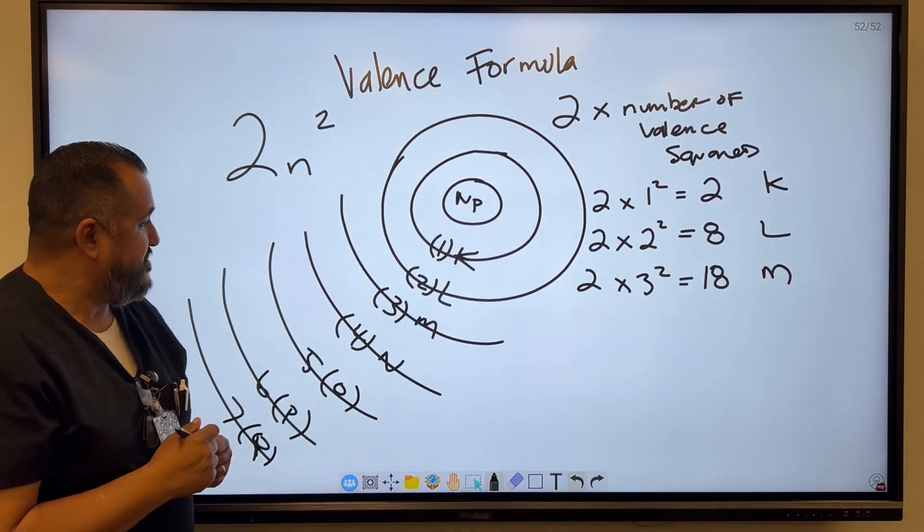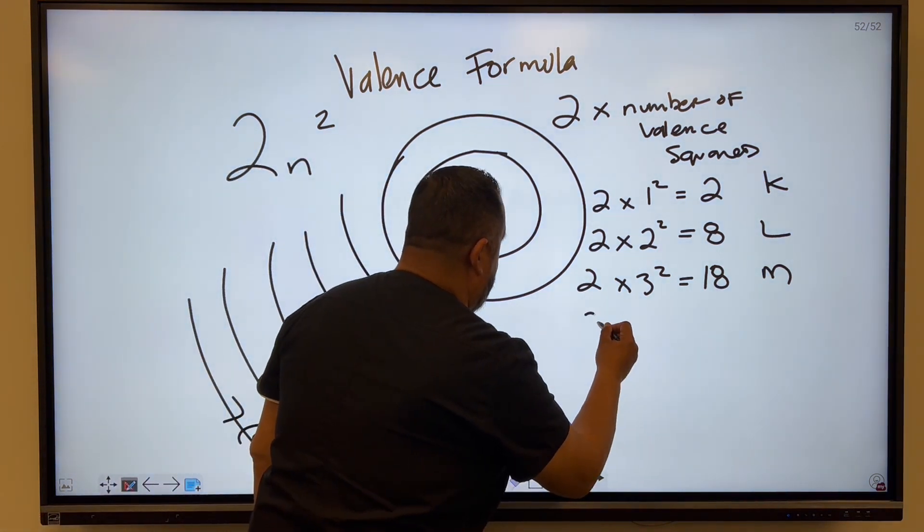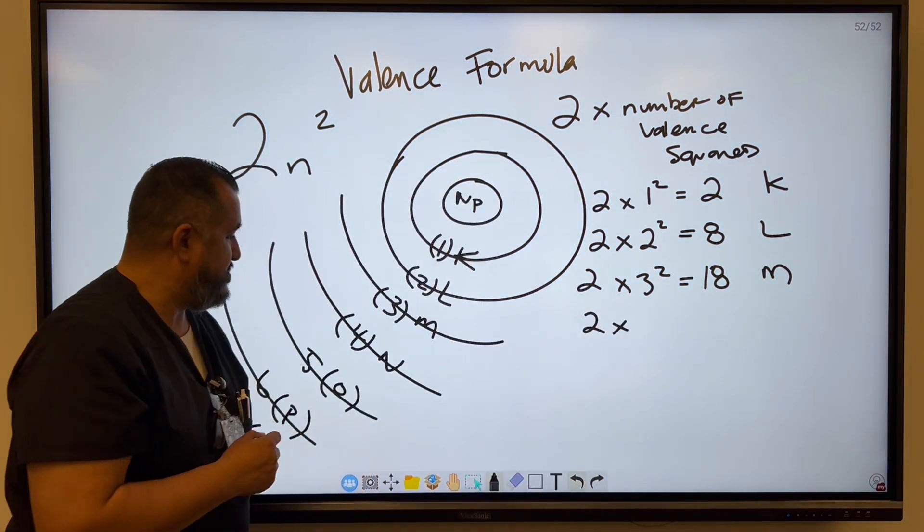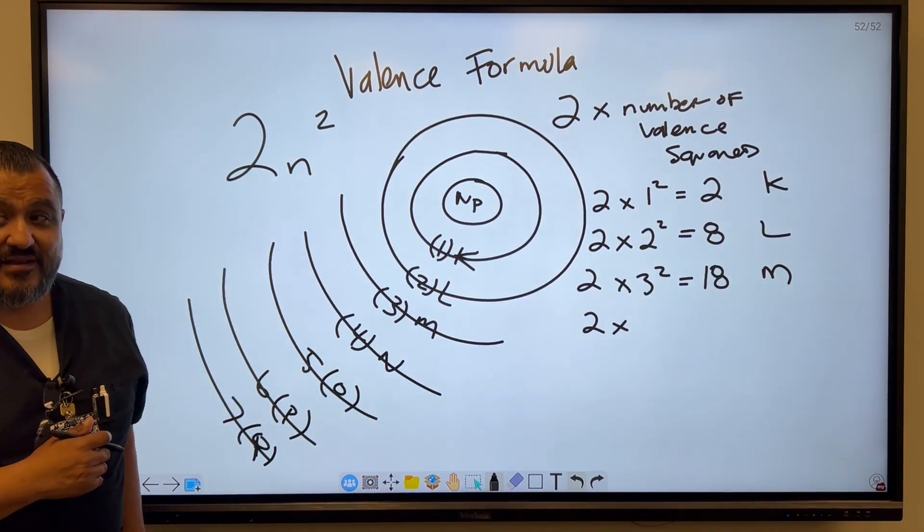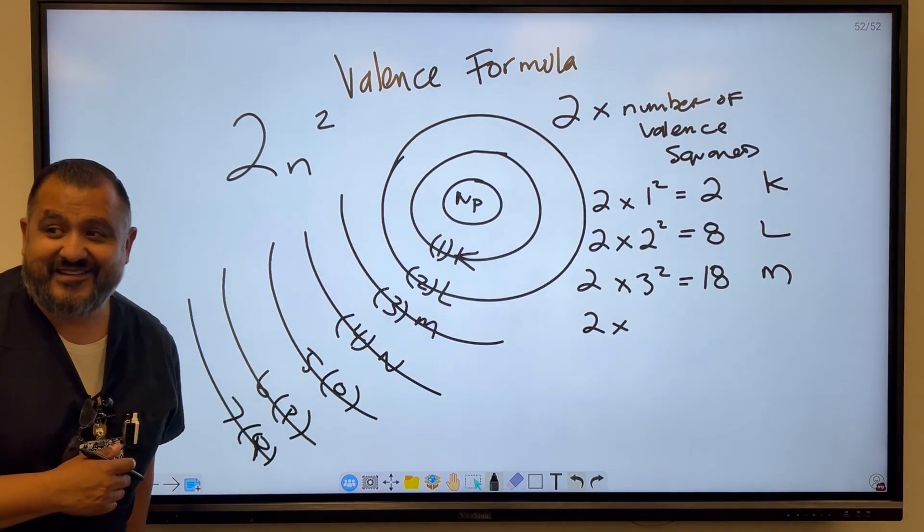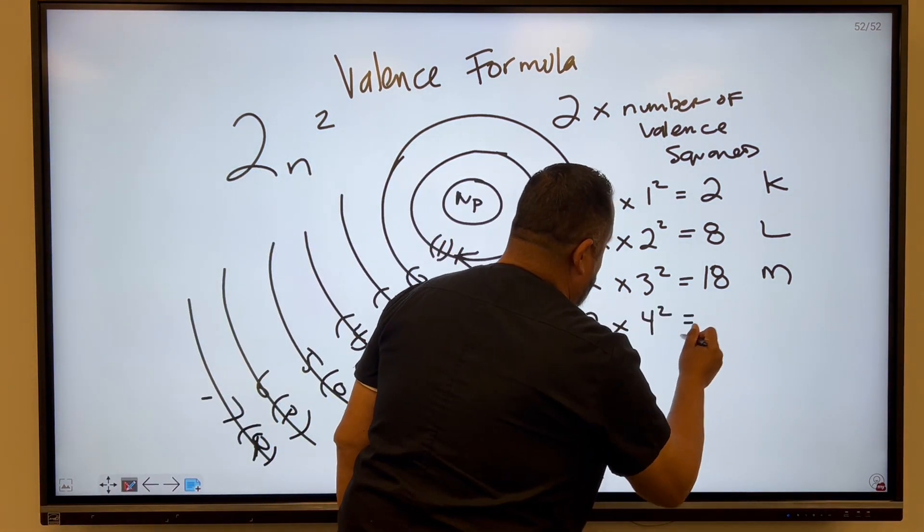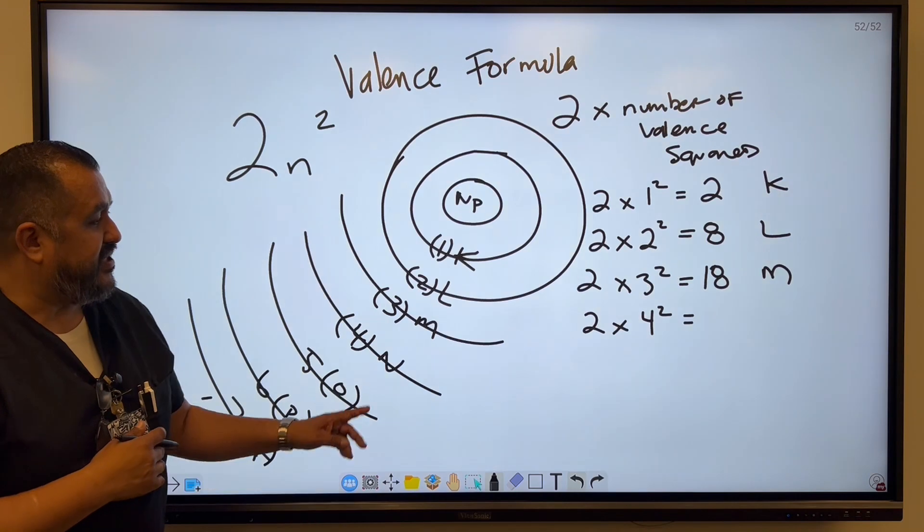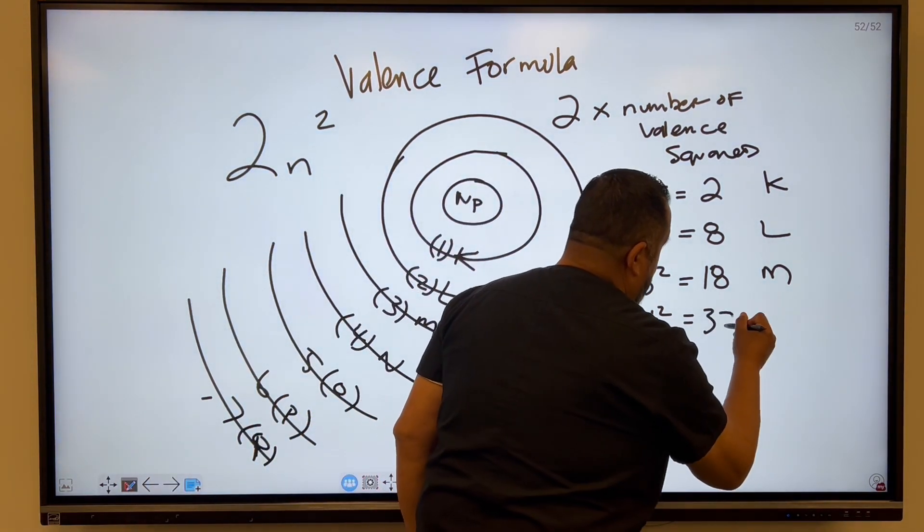So I'm going to let you guys figure out N. So 2 times what? It's going to be 4 squared. So 2 times the number of N squared. So 16 times 2 is 32. And that's N.